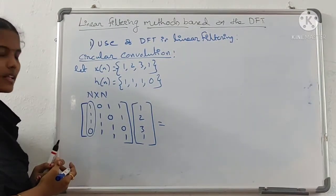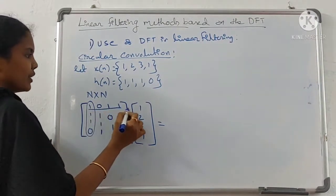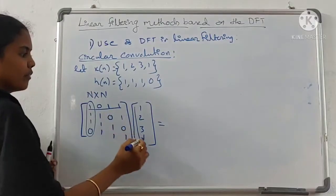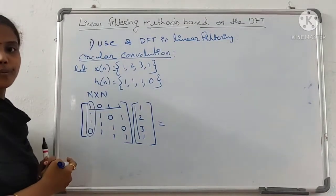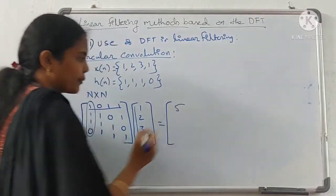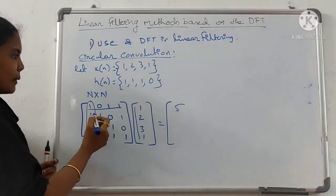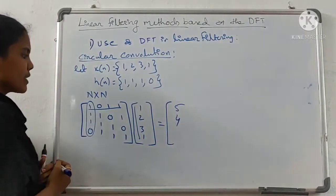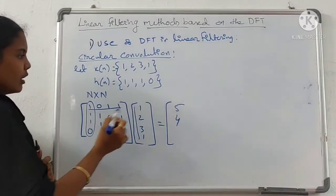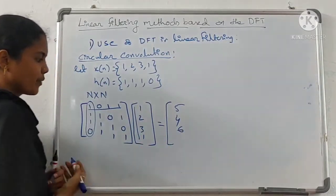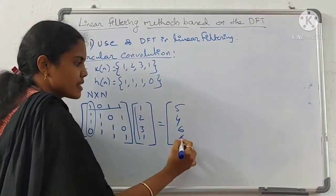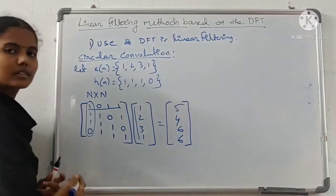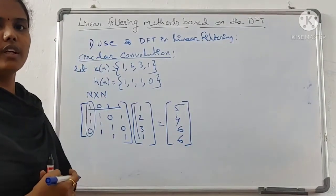Computing the circular convolution by multiplying each row of the matrix with x(n) = {1, 2, 3, 1}: 1+0+3+1=5; 1+2+1=4; then 1+2+3=6; and again 6. So Y(n) = {5, 4, 6, 6}. This is the circular convolution result.